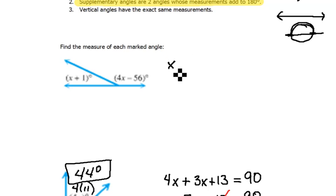We know that x plus 1 added to 4x minus 56 has to equal 180 degrees because of that nice straight line. Now we have our equation and we can go ahead and start solving this.